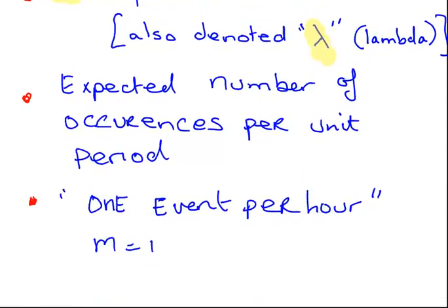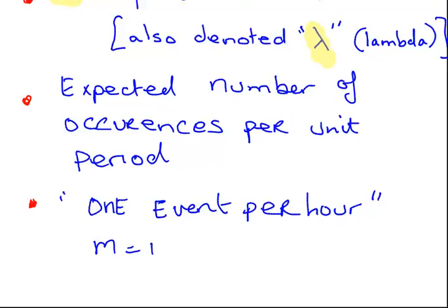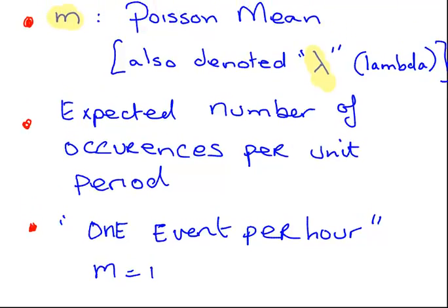Now, what is M? What is this Poisson mean, lambda? The Poisson mean lambda is the expected number of occurrences per unit period. So if I was to ask how many events are we expecting in the next hour — an event could be somebody turning up at our shop or a phone call — we would say one event per hour, on average.